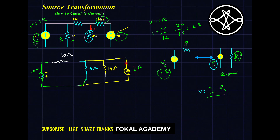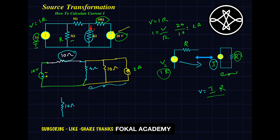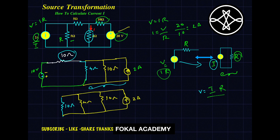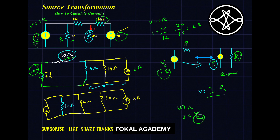Now keep this current source as it is along with the 4 ohm resistor. Change this voltage source into a current source. When converting voltage to current, the resistor comes into parallel — 10 ohms in parallel. The current is downward. According to Ohm's law, I = V/R = 10/10 = 1 ampere.